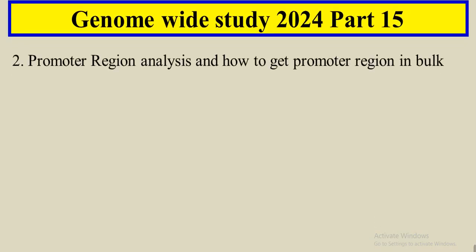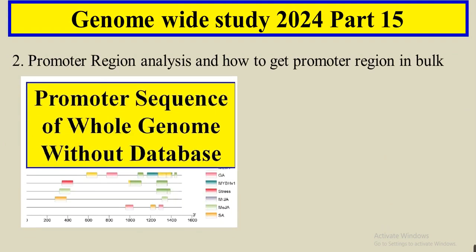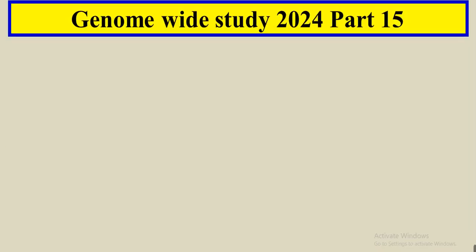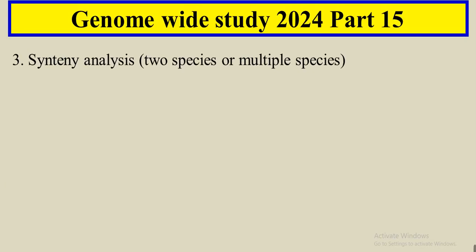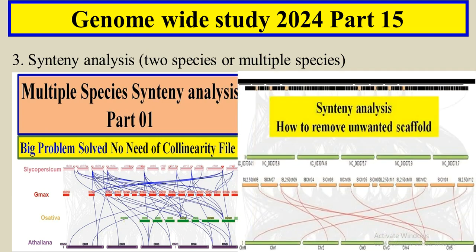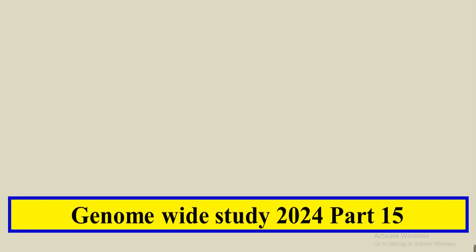The second analysis is how you can get the promoter region of a whole gene family in a single click and also how you can analyze that promoter region. The third analysis you can include in your genome-wide study is the syntenic analysis — you can show the syntenic regions shared among different crop species of your family, and you can include many crops or compare between just two crops.